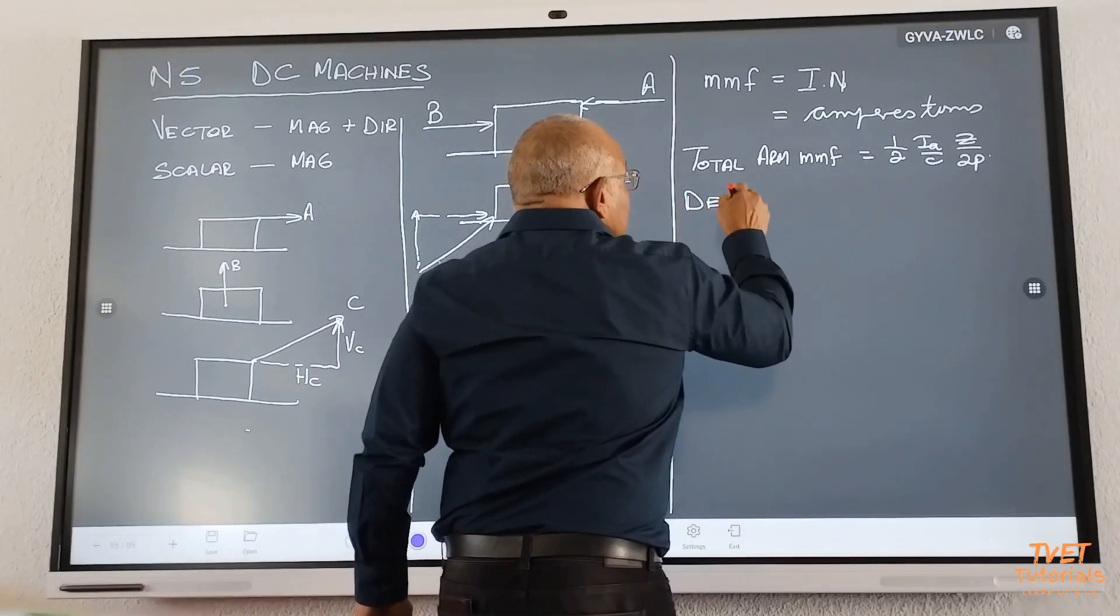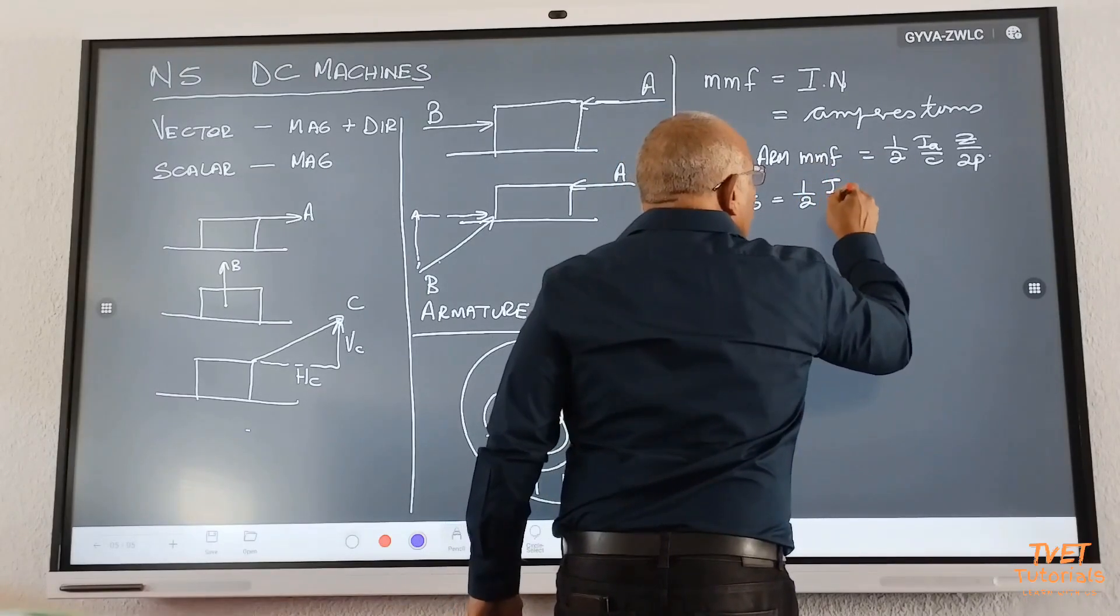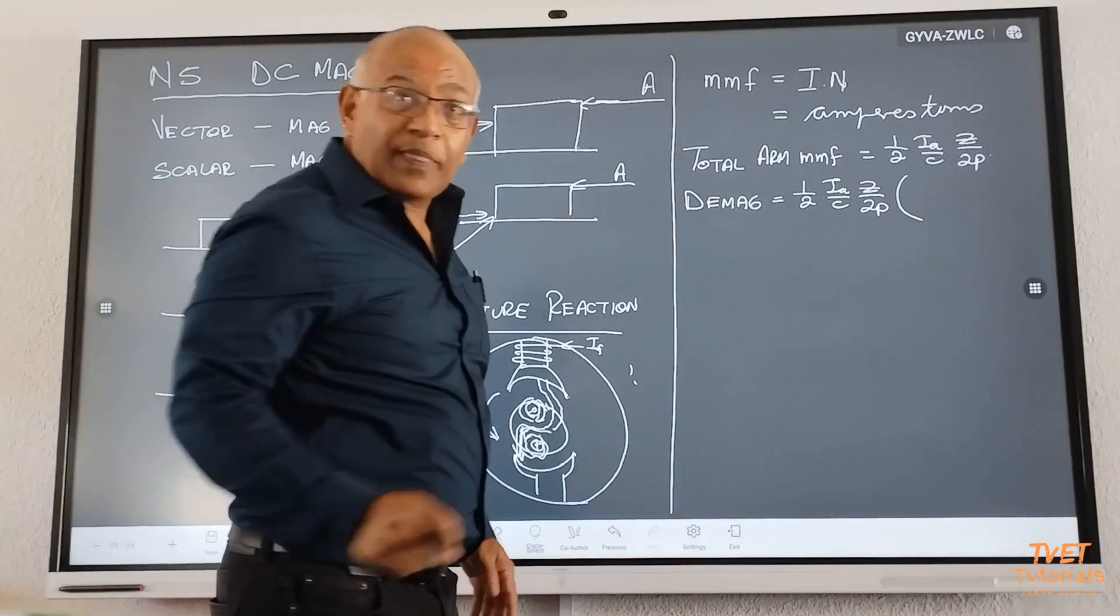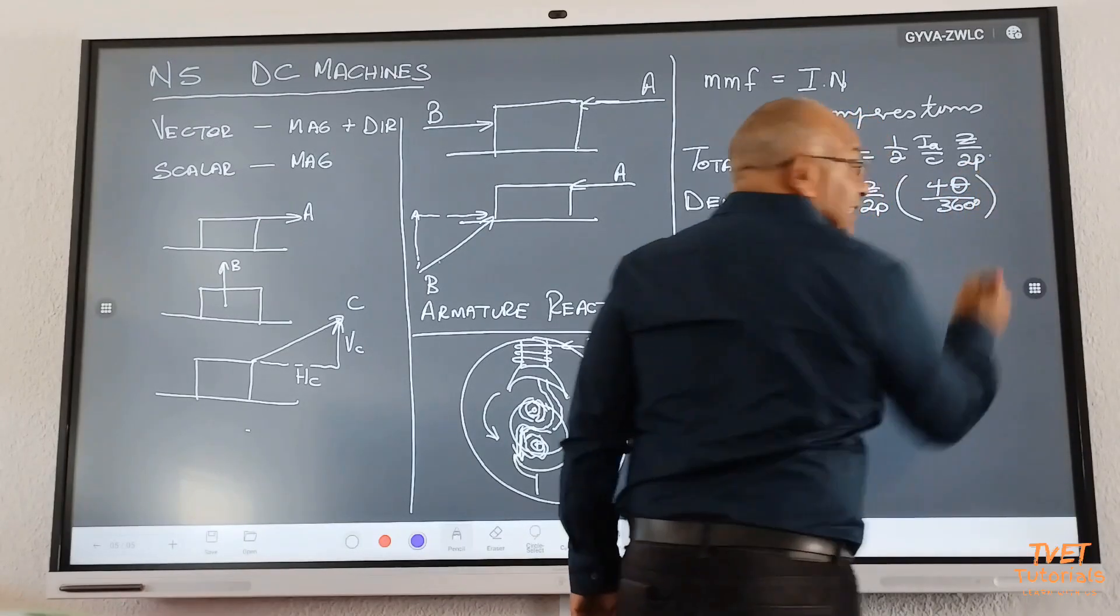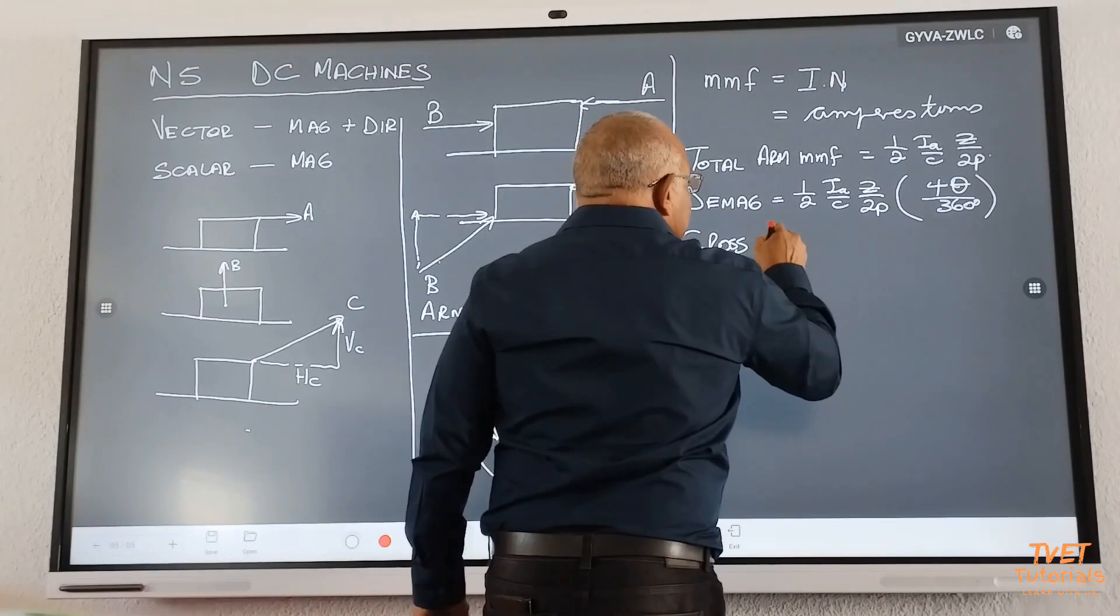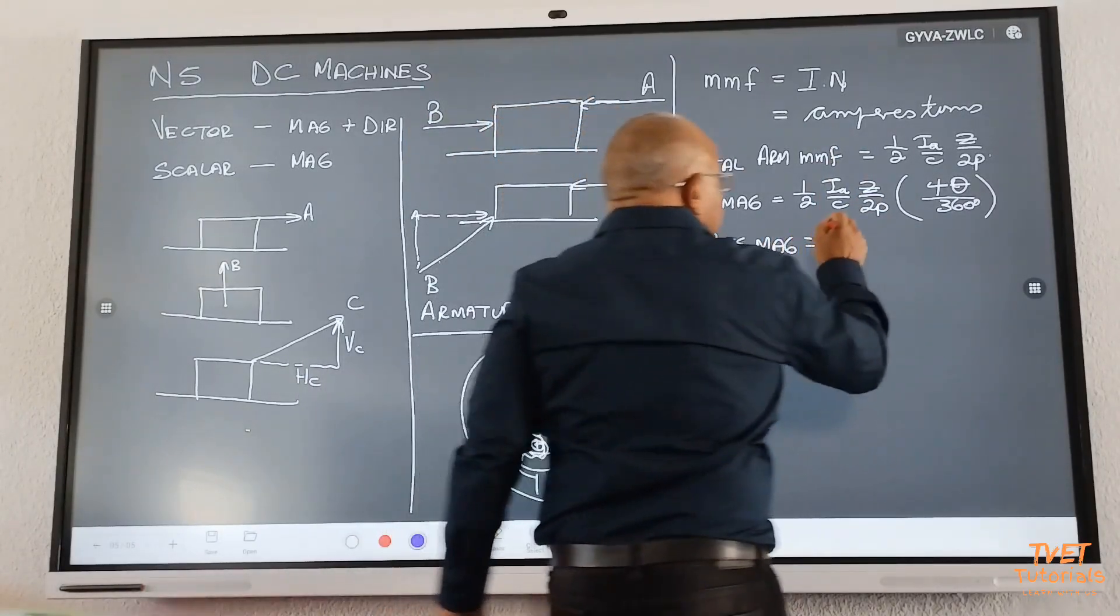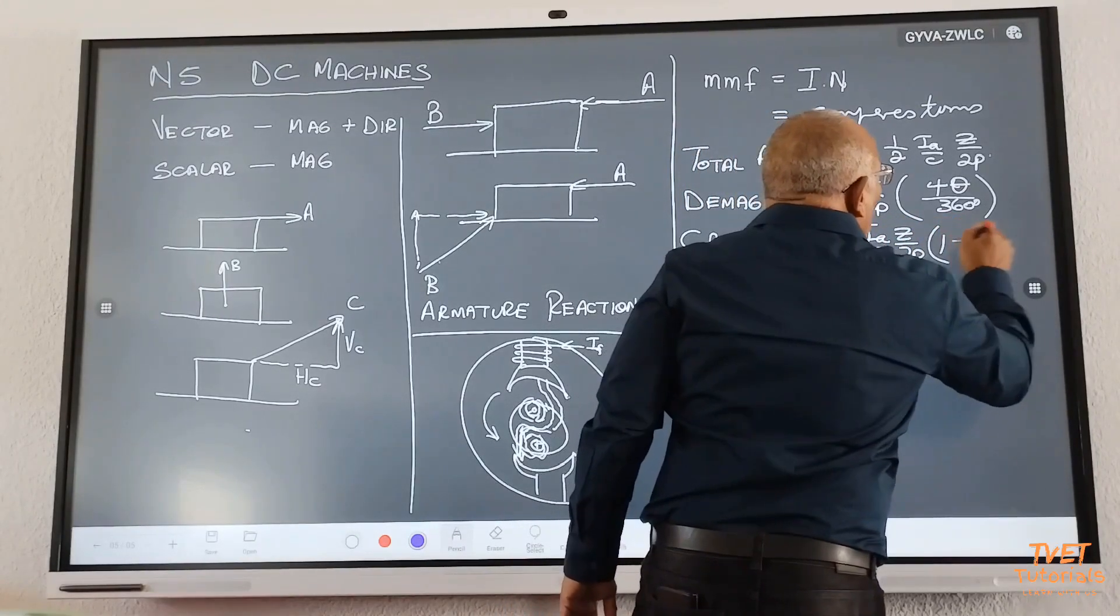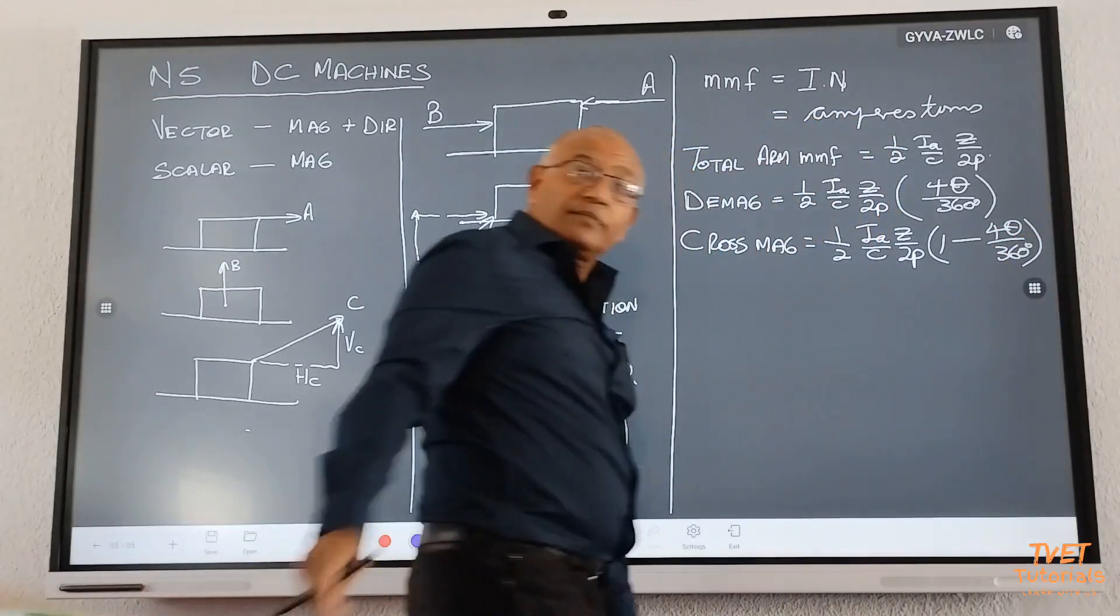So, we're going to ask you, what part of that MMF is responsible for opposing? We call it demagnetizing. So, demagnetizing equals to the same formula, one over two, IA over C, Z over two P, but there is a factor. What is the factor? Which is four theta divided by 360. Is that correct? And then the cross-magnetizing, is going to be part of that, isn't it? So, the remaining part. And that becomes one over two, IA over C, Z over two P, and what is the balance? One minus four theta divided by 360. You see?